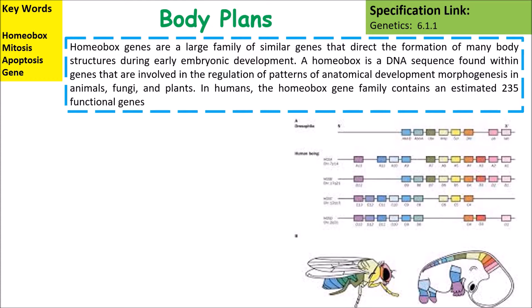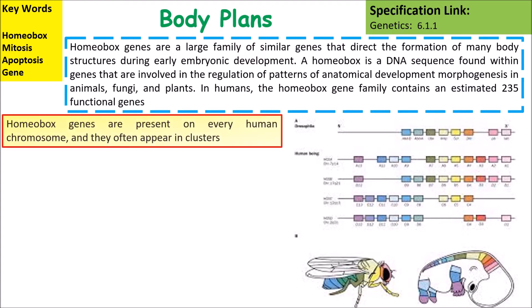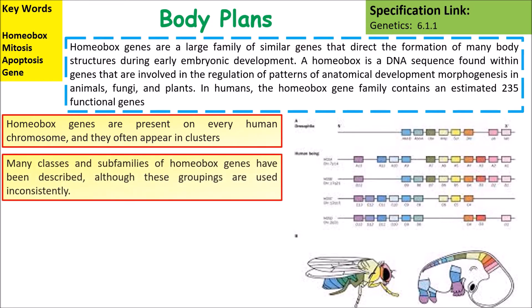In humans, the homeobox gene family contains an estimated 235 functional genes. Homeobox genes are present on every human chromosome and they often appear in clusters. Many classes and sub-families of homeobox genes have been described and identified, though these groupings are used inconsistently.